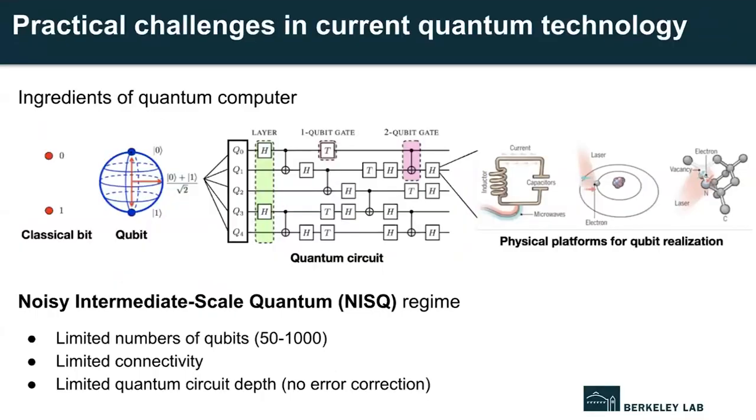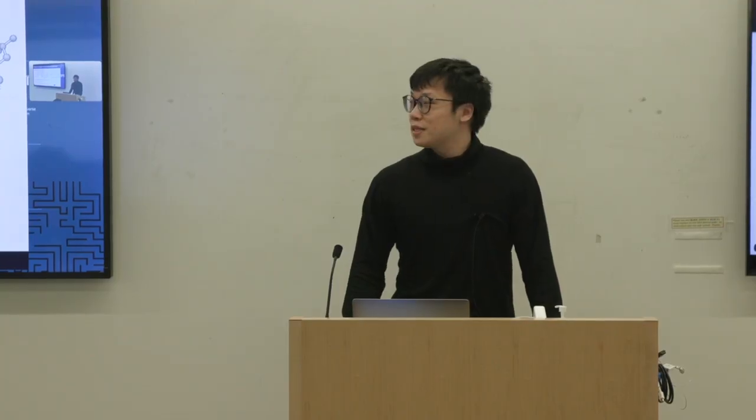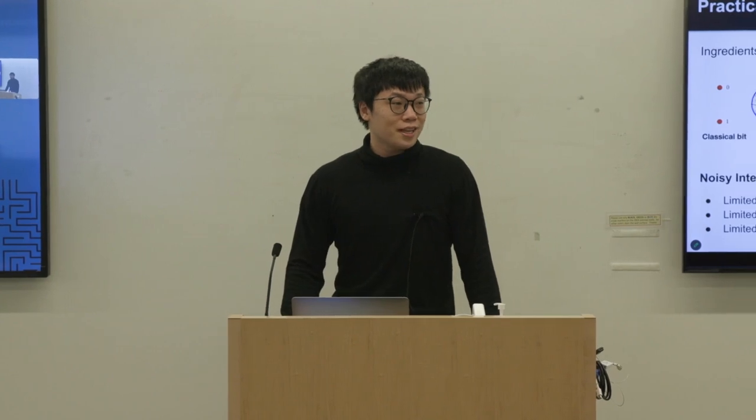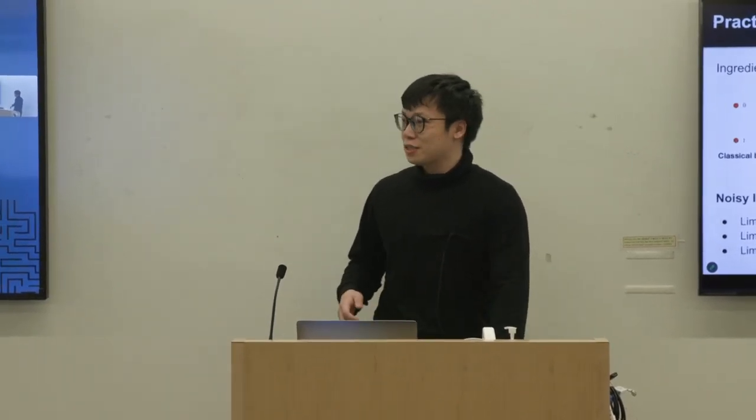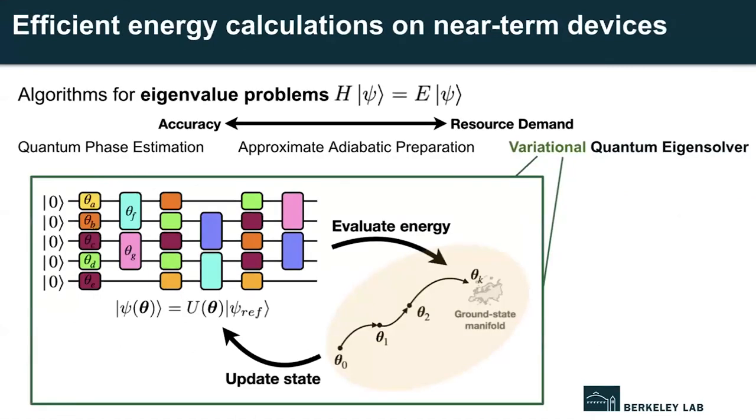Although quantum computing is an attractive paradigm with lots of exciting progress, we have not entered the era of perfect quantum computation yet. Current devices face various constraints as we're in the so-called noisy intermediate-scale quantum era. We're limited first by the number of qubits we can manage, second by the connectivity between qubits on different physical platforms, and third by how many operations we can perform. Beyond these size constraints, we must also account for noises or errors throughout the whole computation.